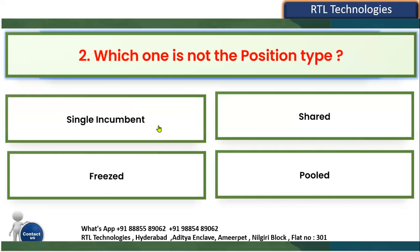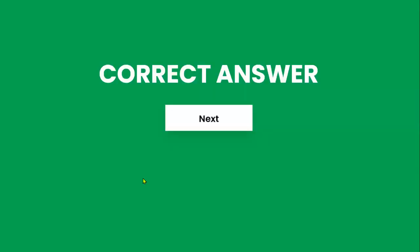Single incumbent means we hire only one employee for that position. Shared means multiple people can share that particular position. Pooled means we can hire multiple employees and there will be a headcount. We don't have any position type called 'freeze' — actually we have 'none' type, but freeze is not there. So 'freeze' is the right answer.